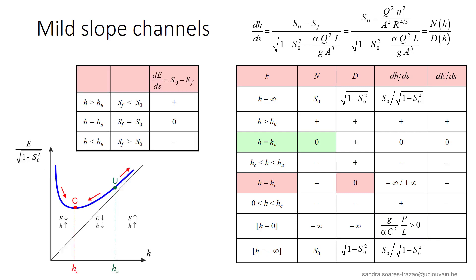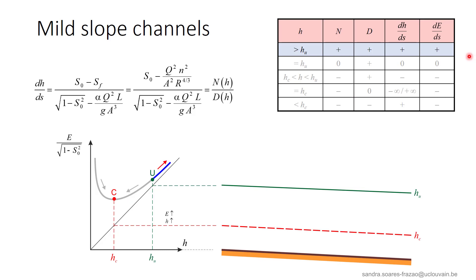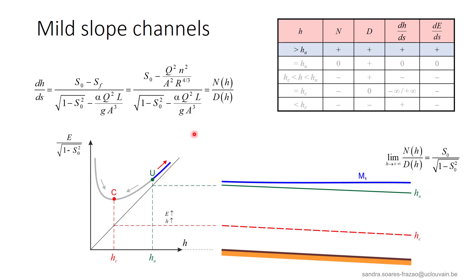Finally, using the information we already know about the evolution of the specific energy allows us to fill the last column of the table. If we focus on the useful lines of the table, we can combine the dh/ds and dE/ds information to describe the possible water profiles. For hu larger than hc on mild slopes, starting with water depth larger than hu, the water depth will increase together with an increase of specific energy. The evolution goes along the specific energy curve, and the result is the M1 profile that approaches uniform flow upstream and tends towards a horizontal free surface downstream.